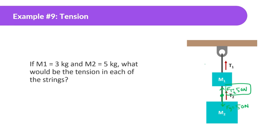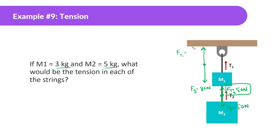String 1 is going to have both boxes pulling it down. That's m1 plus m2, which is 3 plus 5, so 80 newtons of weight. It's holding up both of them, so the force of tension in string 1 is equal to 80 newtons.